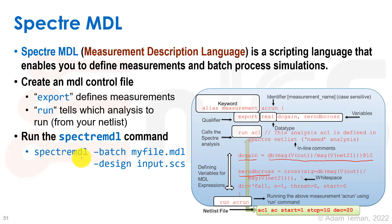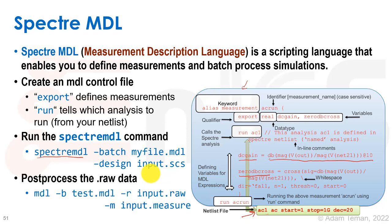You define your measurements and then run 'acrun', scripting around it with any tool that runs these measurements. To run Spectre MDL from the command line, you give the MDL batch file and the netlist as input. Also, if you've already run a simulation, it dumps out a .raw folder with all the database data. You can then post-process by pulling out those measurements using MDL without rerunning the simulation, using the input.raw from the previous simulation instead of the input SCS.